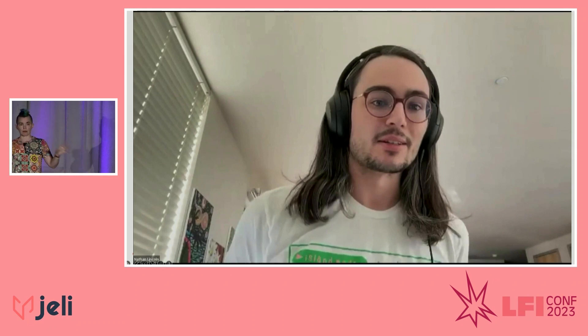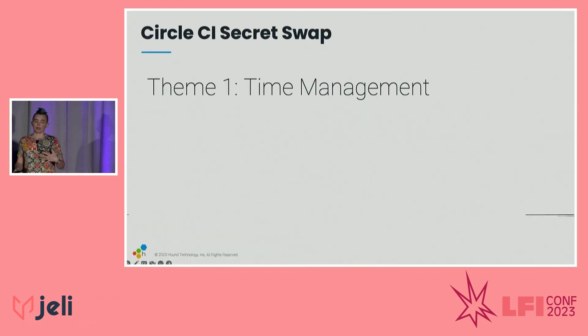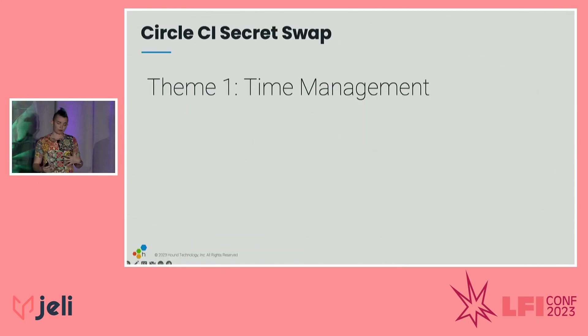Here's Nathan: 'Our main objective here is to learn and get a better understanding of what happened and what it can mean.' This is one of our incident review ground rules that we read out at the beginning of every incident retrospective meeting — you can find these online in a blog post. We're here to find meaning.